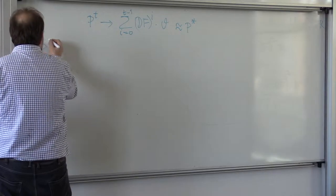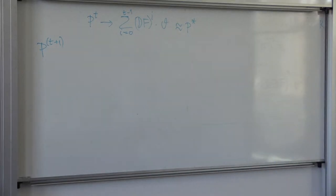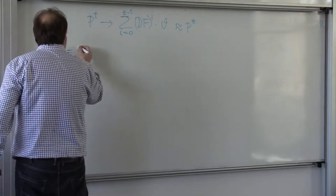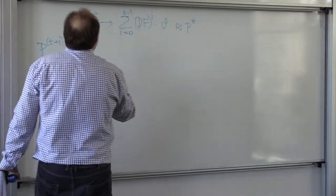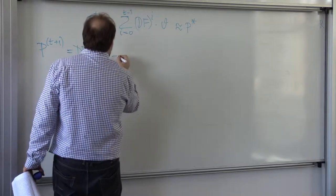So the iteration is P to the T plus 1, do we have time to finish? Yeah, just enough, is equal to DF times PT, right, plus V.